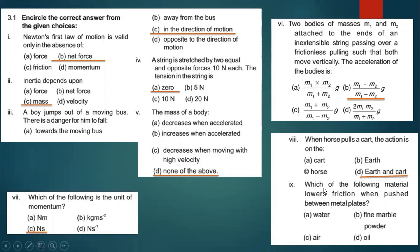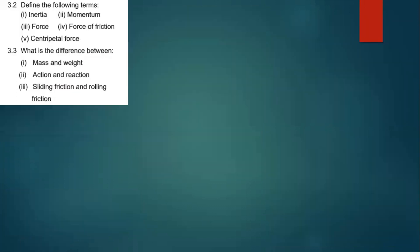Part nine: which of the following material lowers friction when pushed between metal plates? Option D is the right answer — oil. When we use oil between surfaces, friction will reduce.